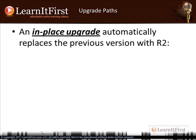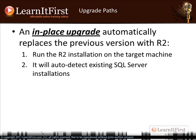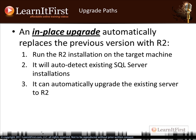Let's talk about the in-place upgrade. Notice what's going down right here — it's automatically replacing. When you do an in-place upgrade, you're not changing servers. You take your SQL Server 2008 R2 DVD, put it in the drive, hit setup, and it automatically replaces the existing installation. You run the installation on the target machine; it automatically detects the previously installed SQL Server version and you can automatically upgrade.